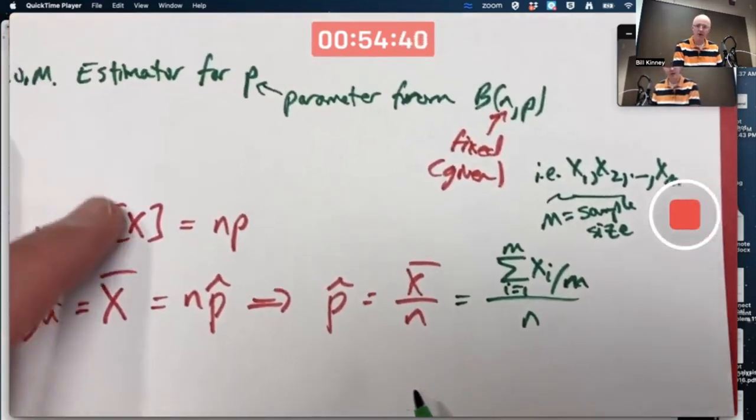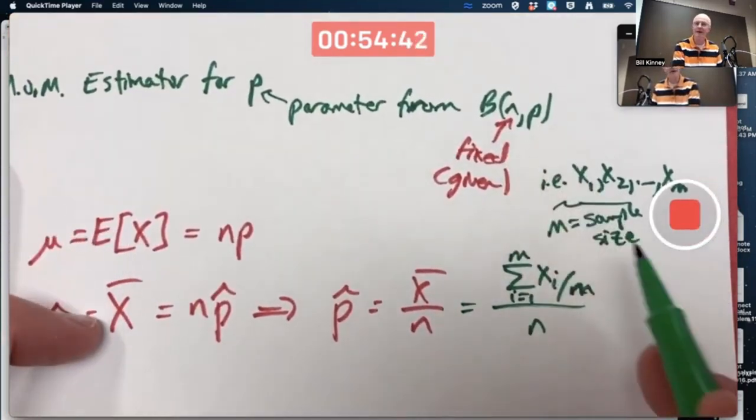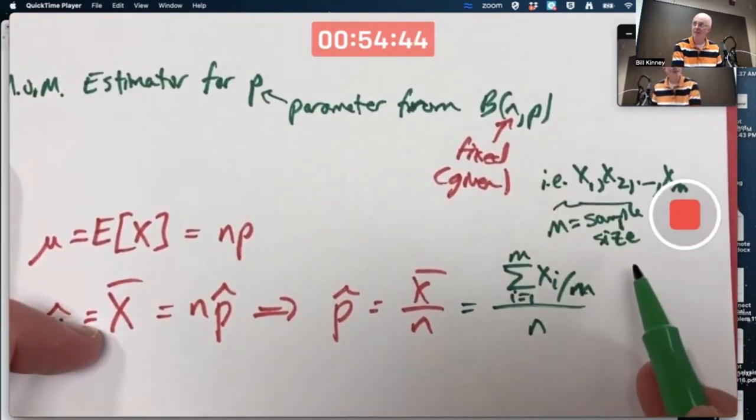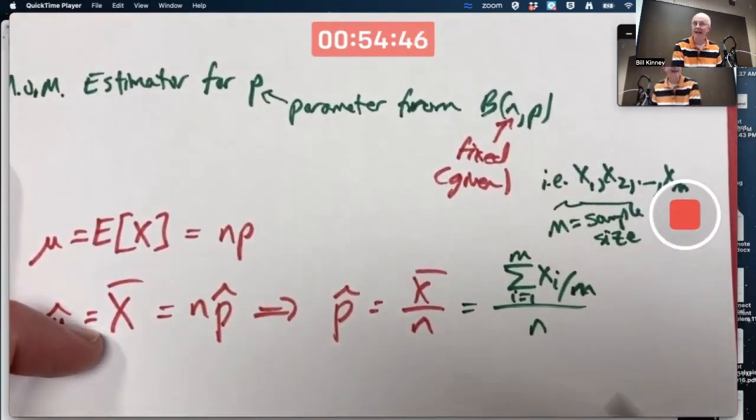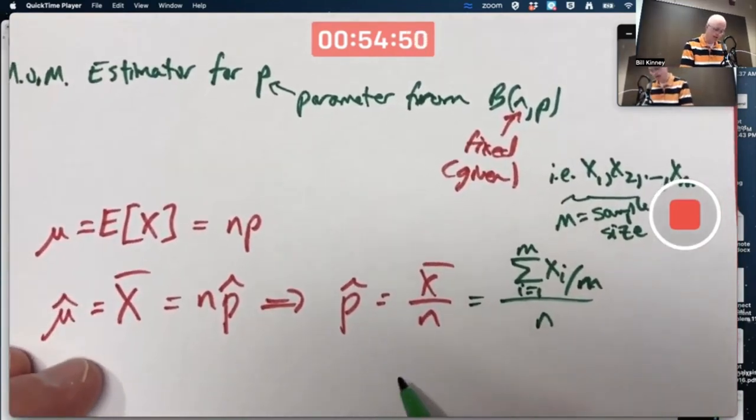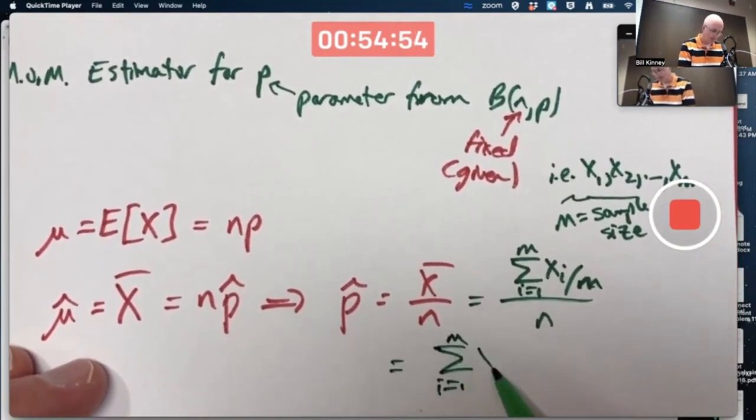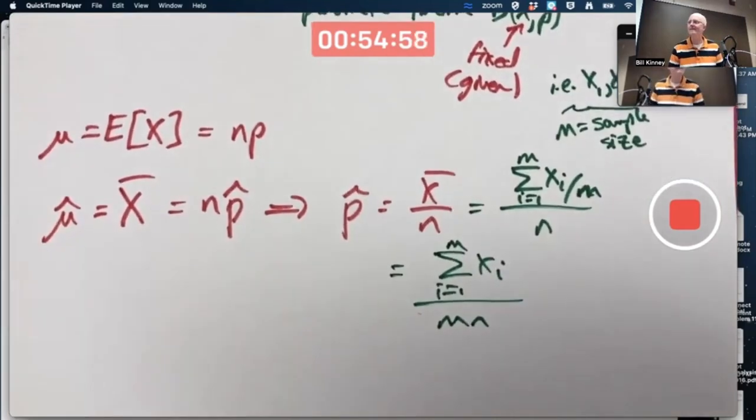So when you're thinking about a binomial distribution with parameters N and P, you want a different letter for the sample size of the random sample, like M. This formula could be simplified. You could write it like this. If you wanted to.